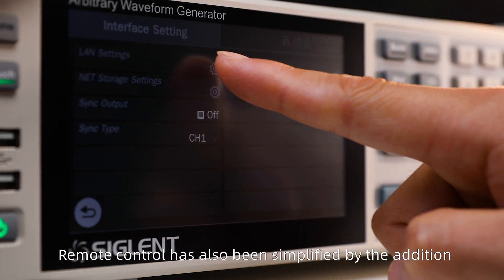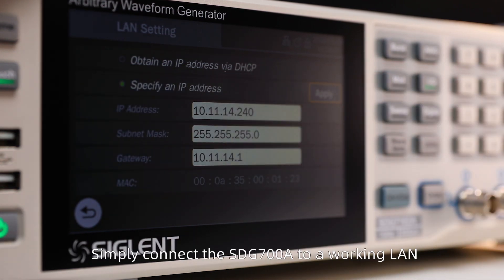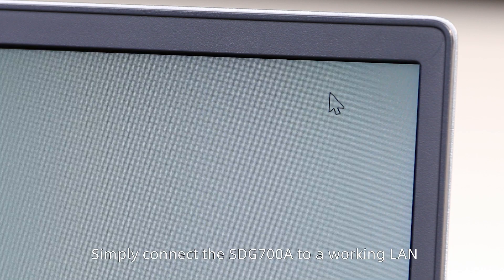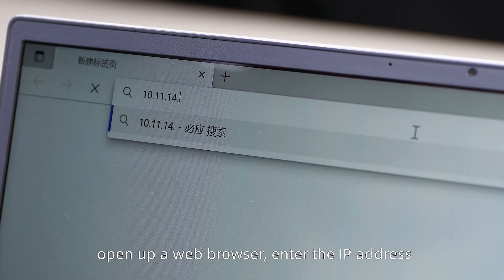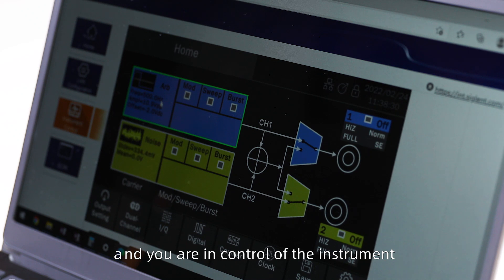Remote control has also been simplified by the addition of Siglent's popular web browser control. Simply connect the SDG-7000A to a working local area network, open up a web browser, enter the IP address, and you are in control of the instrument.